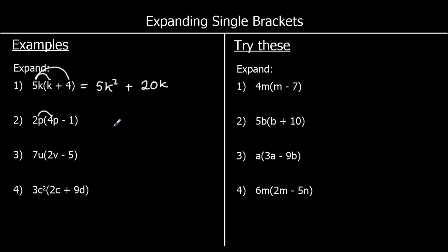The second one: 2p times 4p. So 2 times p times 4 times p — we can times the 2 and the 4 together: 2 times 4 is 8, and p times p is p squared. So we've got 8p². And 2p times a negative 1 is negative 2p.